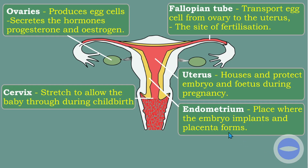The function of the cervix is to stretch to allow the baby through during childbirth. This narrow part stretches and becomes very wide so the baby can pass through and then move through the vagina and out.